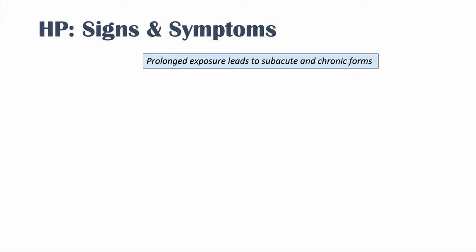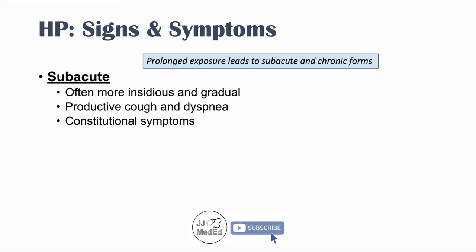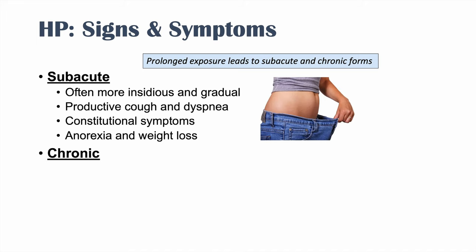Prolonged exposure leads to subacute and chronic forms. The subacute phase is often more insidious and gradual, presenting with productive cough and dyspnea. There are also constitutional symptoms — fatigue, anorexia, and weight loss. If exposure to the particular trigger continues, whether that be a hot tub, bird droppings, or moldy hay, it can progress to the chronic stage of hypersensitivity pneumonitis.